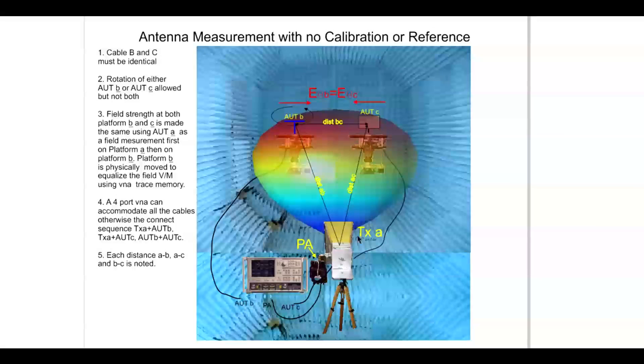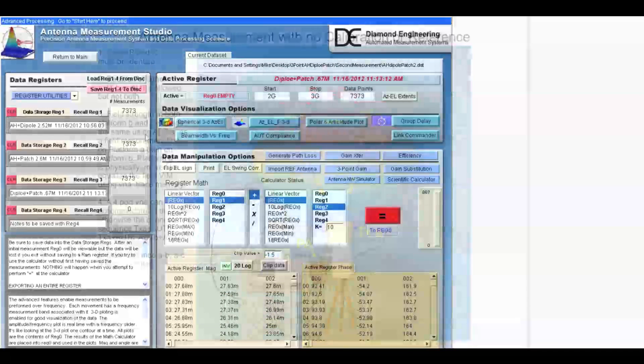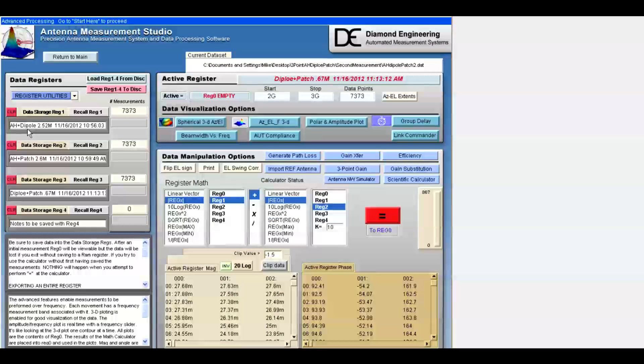We've actually performed these measurements, stored the data, and have now recalled them into Diamond Engineering's Antenna Measurement Studio. As we can see, in data register one, we've stored the horn and the dipole data with a distance of 2.52 meters.